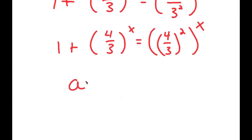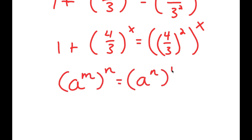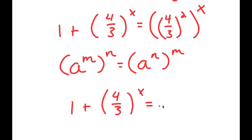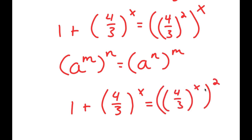Now, if I have something in the form a to the power of m to the power of n, this is equal to a to the power of n to the power of m. So 4 over 3 to the power of 2 to the power of x, I can rewrite that as 4 over 3 to the power of x to the power of 2.